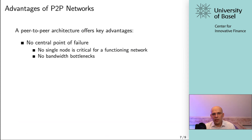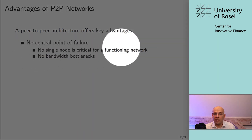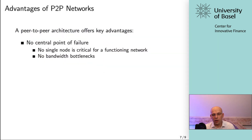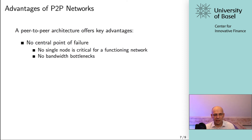Peer-to-peer networks offer various key advantages. The first one you will read everywhere — and it really is a key advantage — is that there is no central point of failure. There is no single node that is critical for the network to function. Any one of these nodes can shut down without being critical to the system functioning. And there are no bandwidth bottlenecks — so even when there is much traffic in the system, it doesn't have to all go through one node; it's distributed.